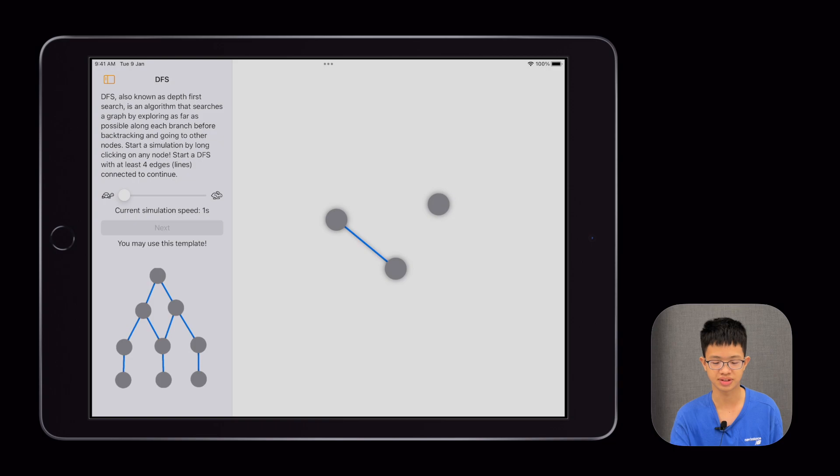Let's go into the first searching algorithm, which is known as depth-first search. Let me create an example graph for you to see what DFS is. You can start DFS on any node, and as you can see, the simulation goes down each path before it goes into the next path.